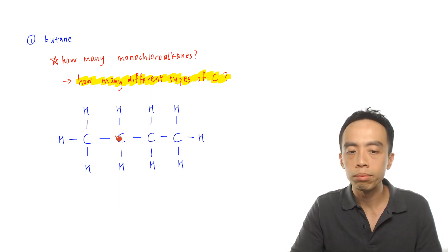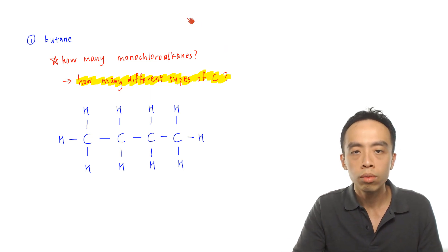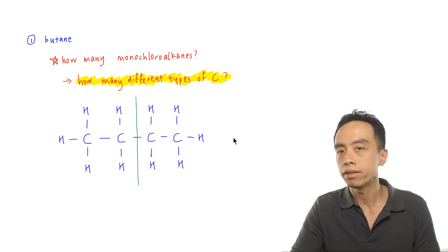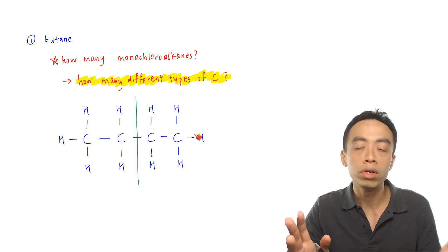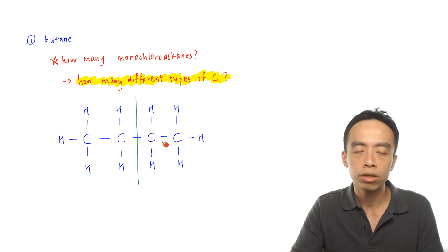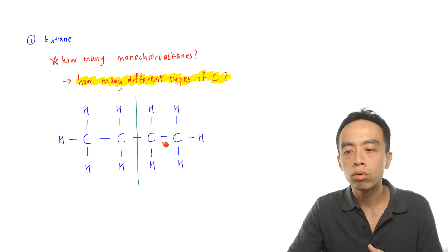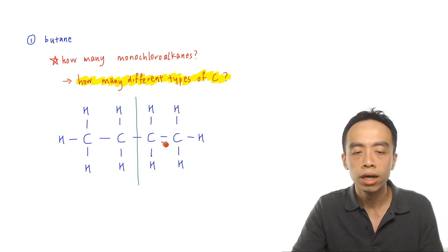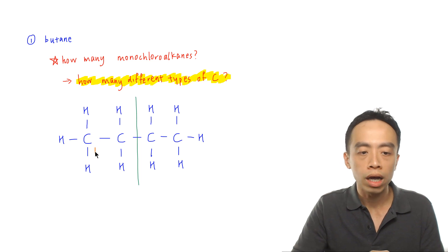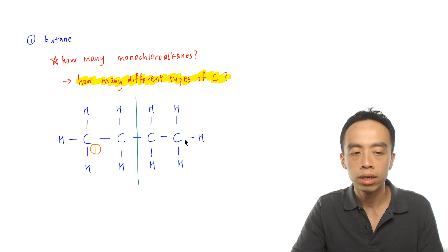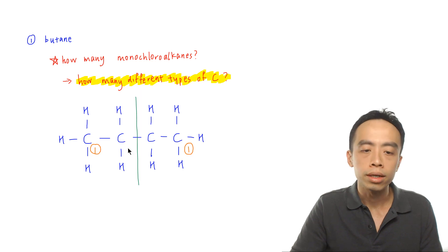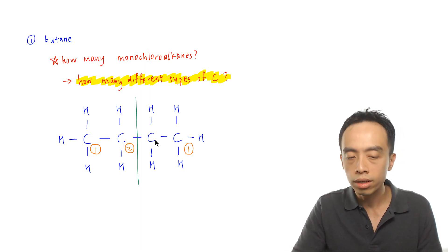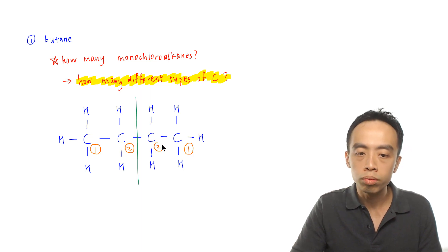Since butane is four carbons long, we notice that it is symmetrical. We can draw a mirror plane right at the center, and there is a mirror image. This carbon and this carbon are mirror images of each other. This CH2 carbon and this CH2 carbon are also mirror images of each other. So the two methyl carbons are identical — both are carbon type 1. The two CH2 carbons are also identical — both are carbon type 2.